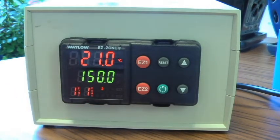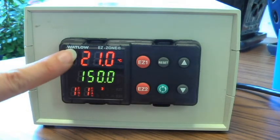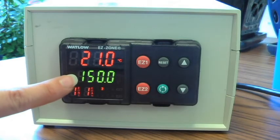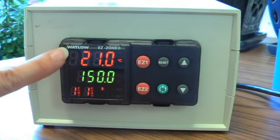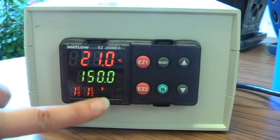That is output 2, and that is sending a message to the heaters to come on at 100% because the current temperature is a long way away from the set point. As this temperature, this application temperature, gets closer to the set point,